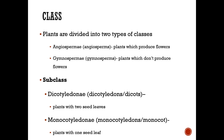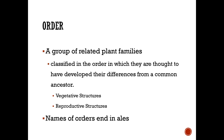Within class, there are subclasses: dicotyledons, which are plants with two seed leaves, and monocotyledons, plants with one seed leaf. Order is a group of related plant families, based on vegetative and reproductive structures, and the names of orders end in A-L-E-S.